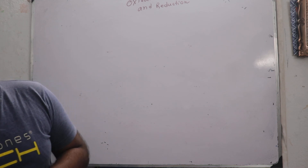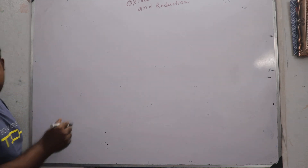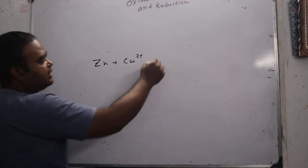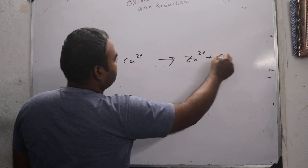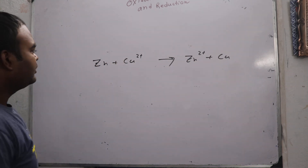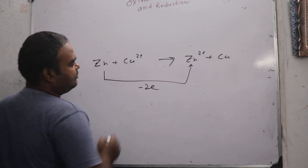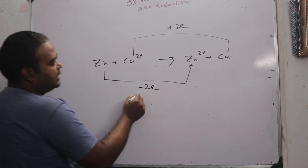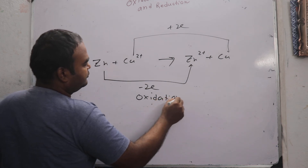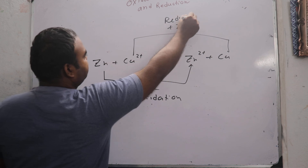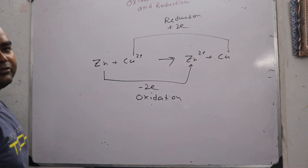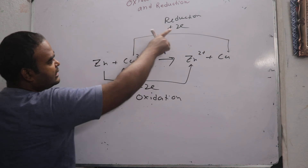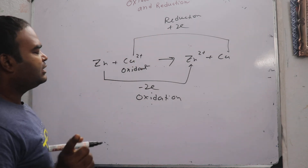Now, what about the oxidation half cell and reduction half cell? Let us consider the zinc and copper 2 plus reaction. Zn reacts with Cu2+ to form Zn2+ and copper metal. In this process, zinc rejects electrons and copper 2 plus accepts them. So the rejection of electron is oxidation, and the acceptance of electron is reduction. The oxidant is the electron acceptor — Cu2+ is the oxidant because electron is accepted. The reductant is the donor — zinc is the reductant.